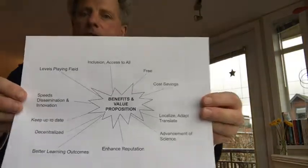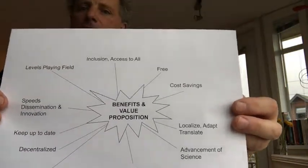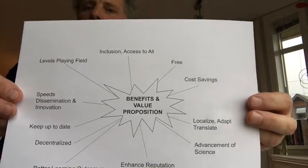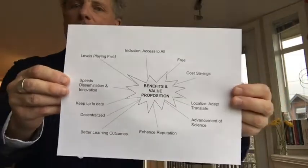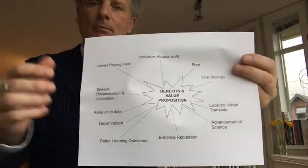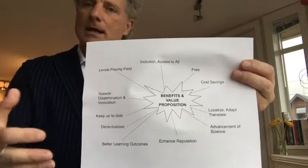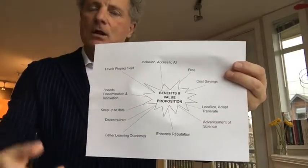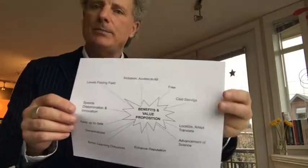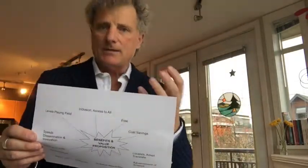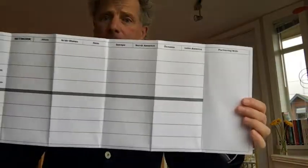The fourth part of the open education framework has to do with what I've called benefits and value propositions. What are the benefits and value propositions associated with open education? You'll be asked to identify those on your roadmap, whether it has to do with better learning outcomes, making access to knowledge available to everyone, or lowering costs. These are all typical benefits associated with open education that we'll be asking you to describe on your open education roadmap. That's what's described on the back of the map.